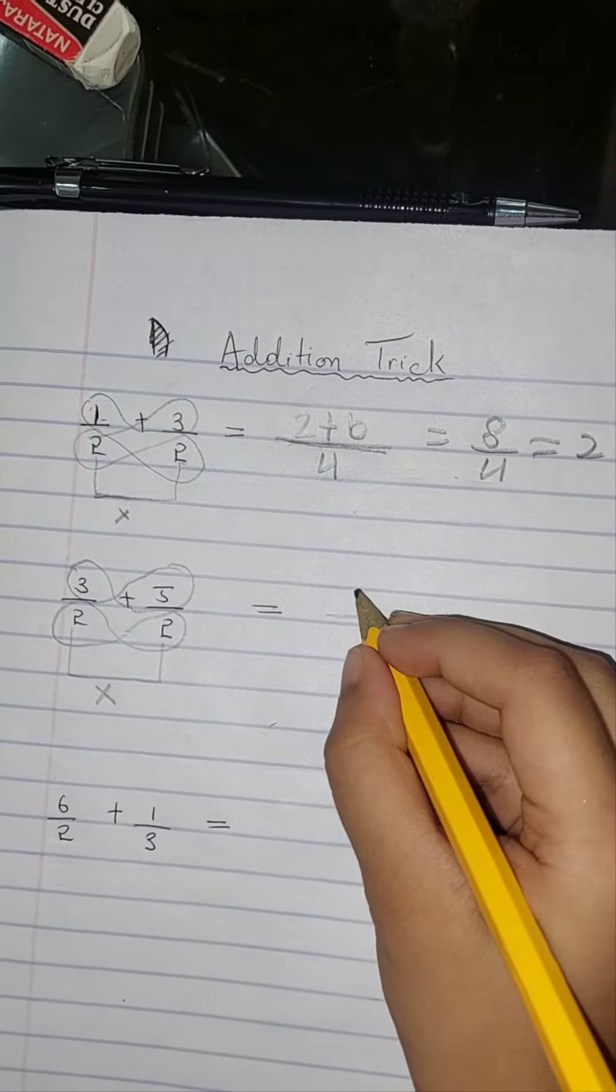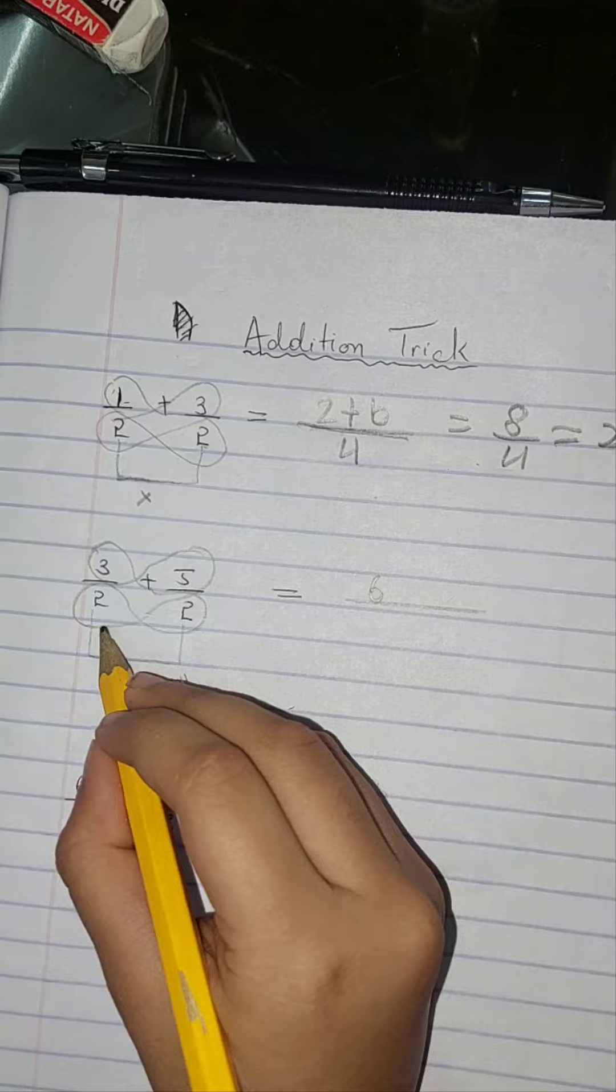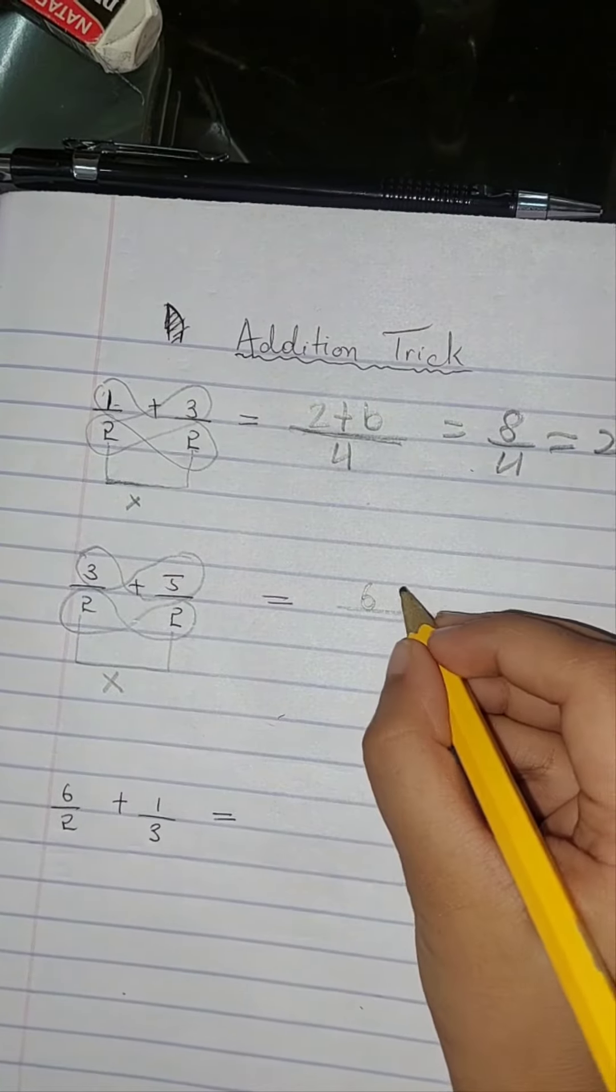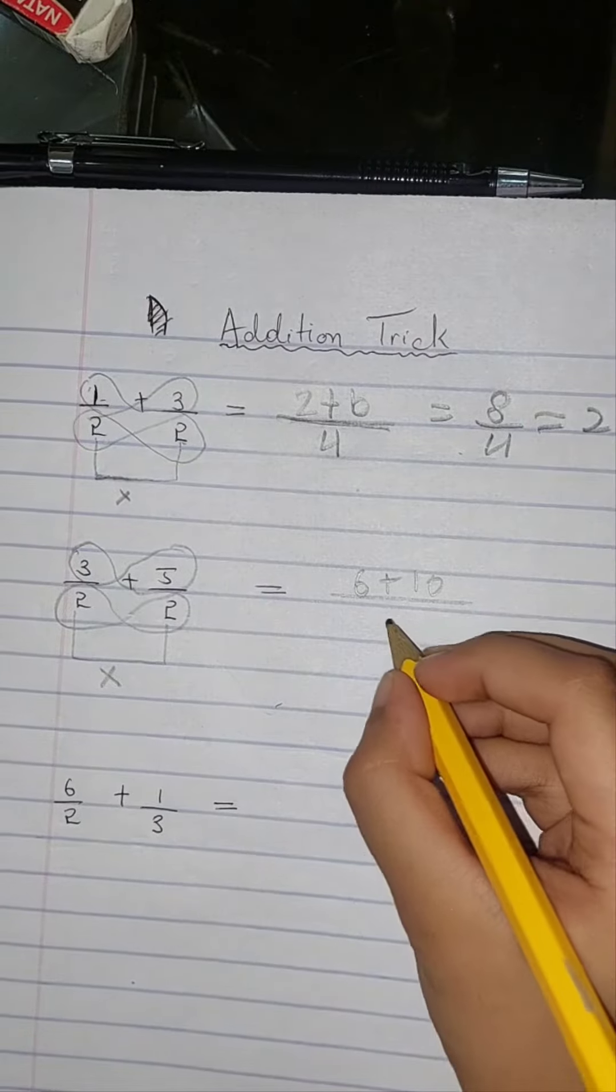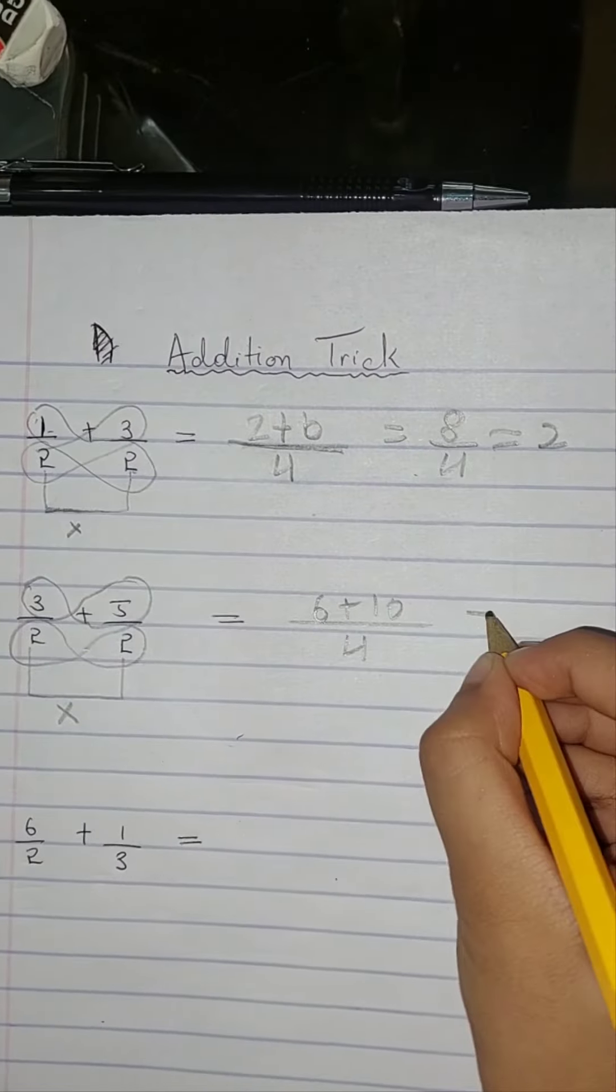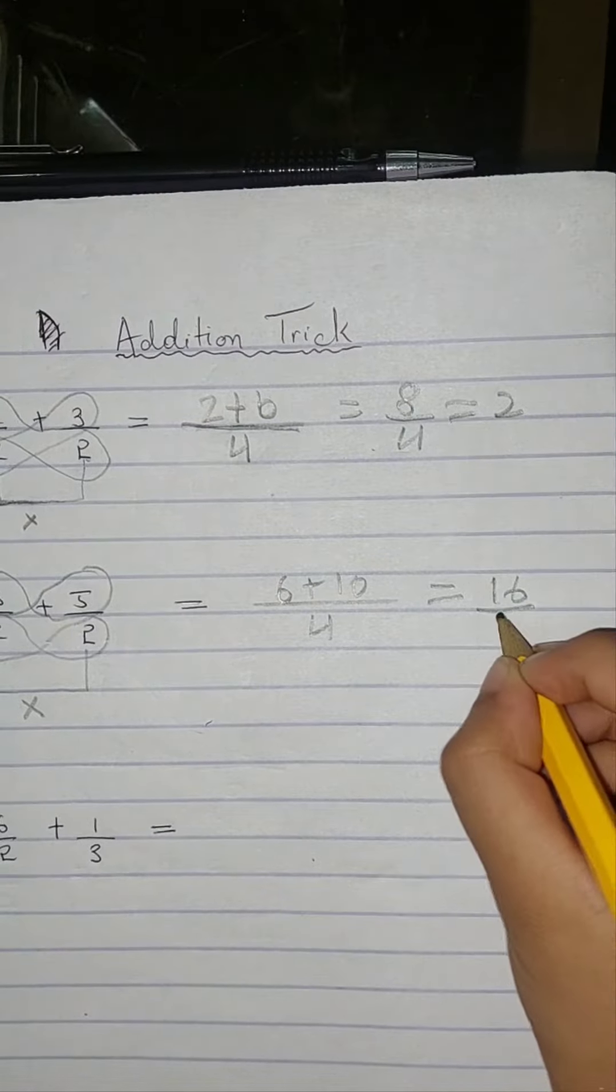Three equals six, then you do two times five equals ten, then two times two equals four. It goes to sixteen over four.